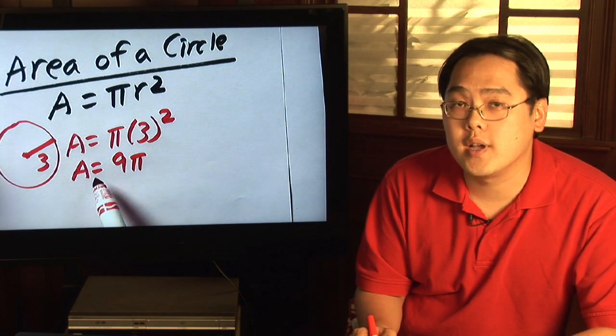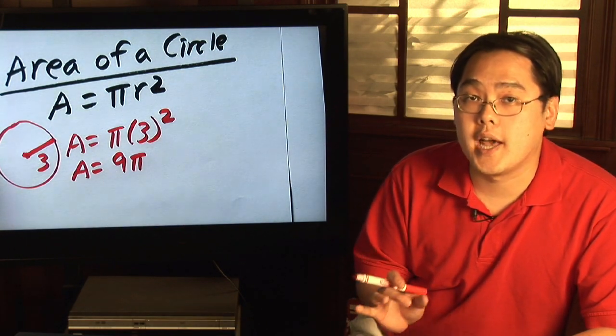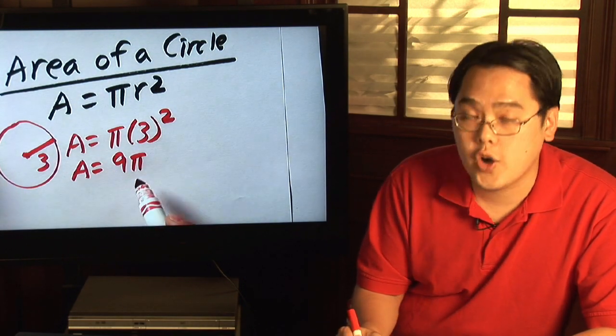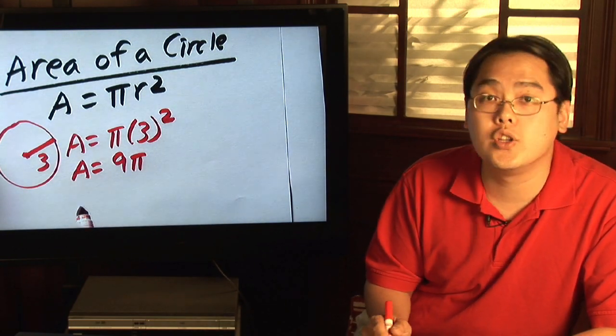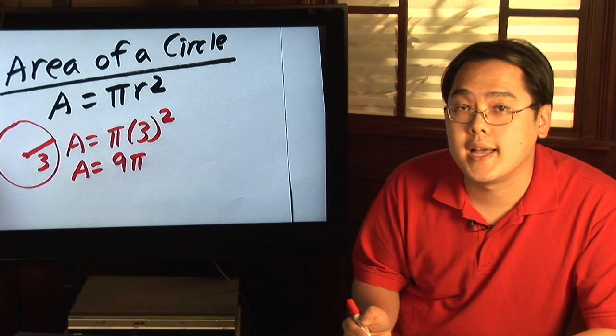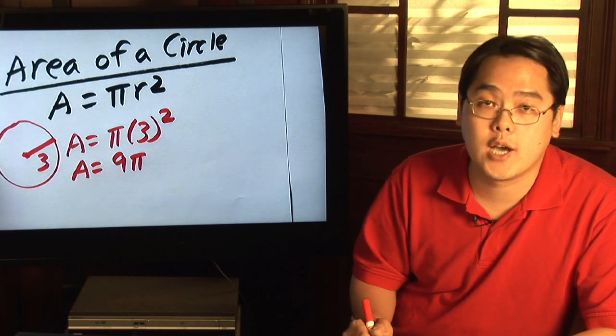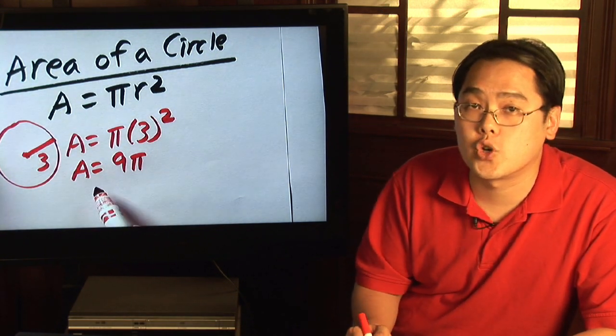So that's the exact value for the area, but if you want to find it in approximate decimal form, then all you need to do is replace pi with either the exact value on your calculator or you can use 3.14 as an approximation, and you'll find out the area of the circle that way.